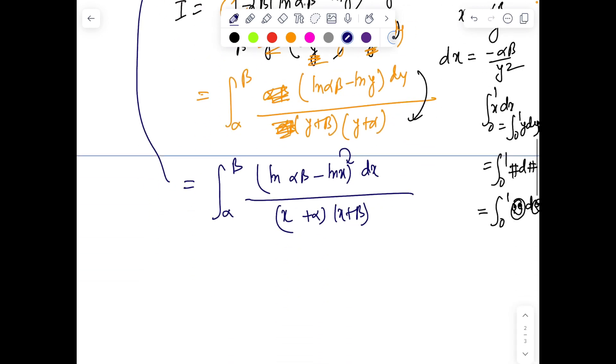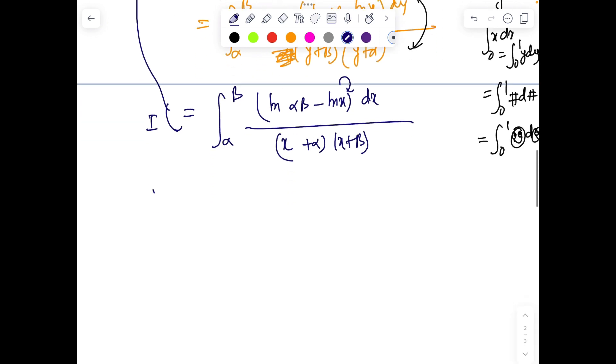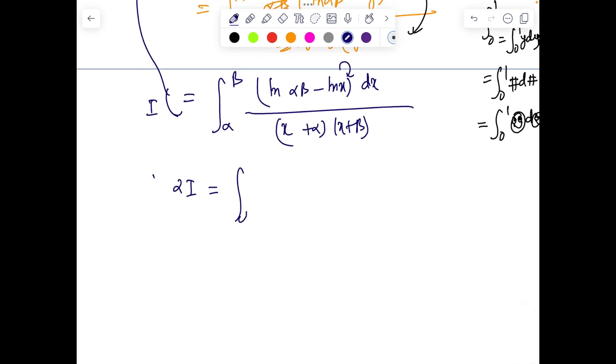This gives a feel similar to King's rule. If I add I plus I, we have 2I equals integral from α to β. The ln x cancels and we have just ln(αβ) dx over (x + α)(x + β). Now it's just integration of partial fractions.